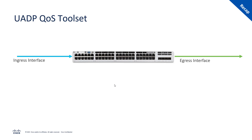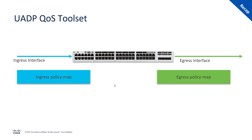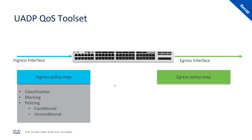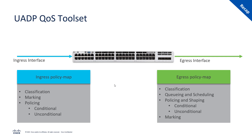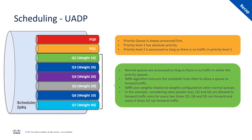Continuing the recap — looking at the QoS toolset and what gets applied where. From a Cat 9K perspective, we have traffic coming in on an interface and going out of an interface, and we can apply a policy map on either the ingress or egress interface. On the ingress side we can perform classification, marking, and policing — both conditional and unconditional. On the egress side we can perform classification, queuing and scheduling, policing, shaping, and marking.